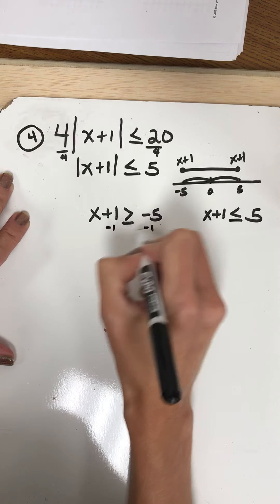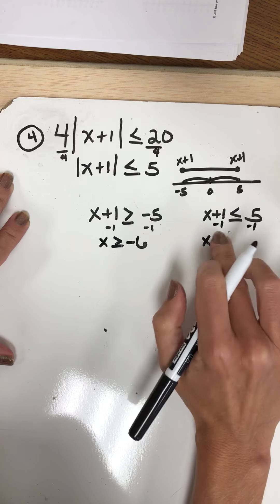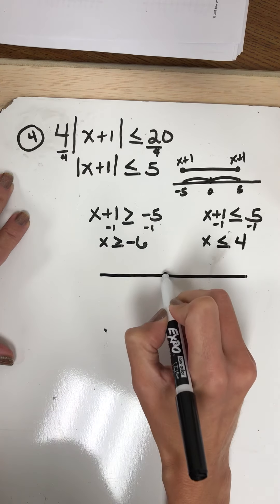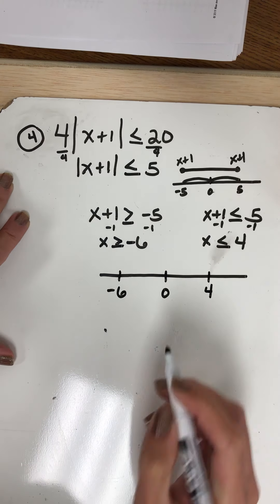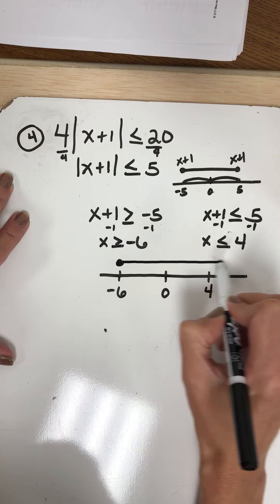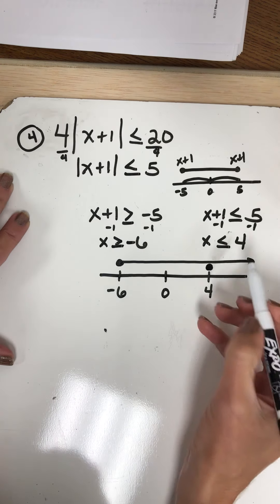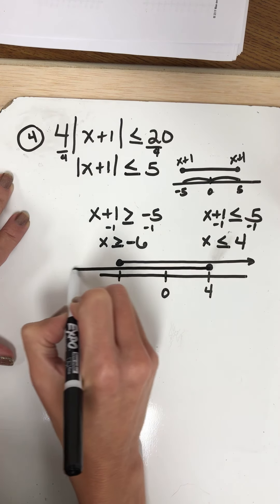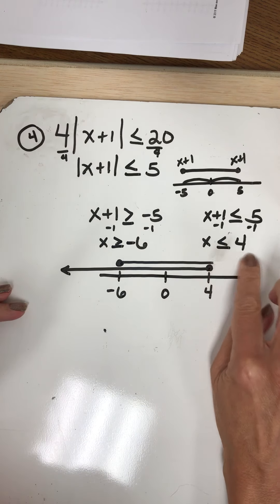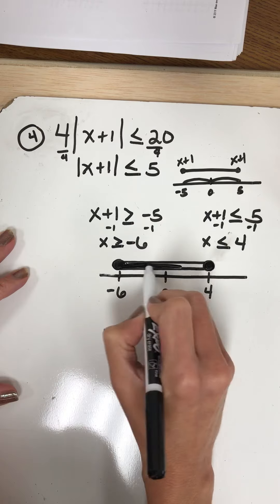Now I'm going to go ahead and solve them. I'll graph this on my number line. Here's 0, here's negative 6, here's 4 — not exactly to scale but close enough. It's going to be a closed circle at negative 6, and x is bigger, so all of these numbers all the way to infinity. And here, x has to be smaller than or equal to 4, so it's a closed circle going to infinity. Because of this type of problem, I'm looking for where these overlap. My final answer is negative 6 and 4 and all the numbers in between.